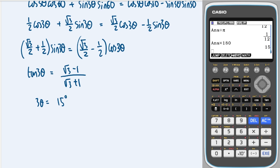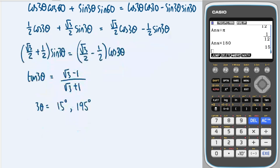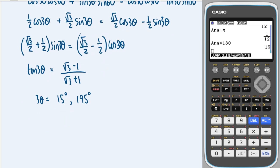And obviously for tan, we add 180. So that is 195 as well. Okay. And then let's see what happens when we divide through by three. We get 5 and we get 65.